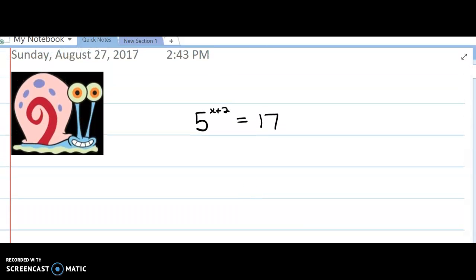I'm able to use logs for this equation here: 5 to the x plus 2 is equal to 17. We're going to use the snail technique. That's why we have Gary the snail right here.